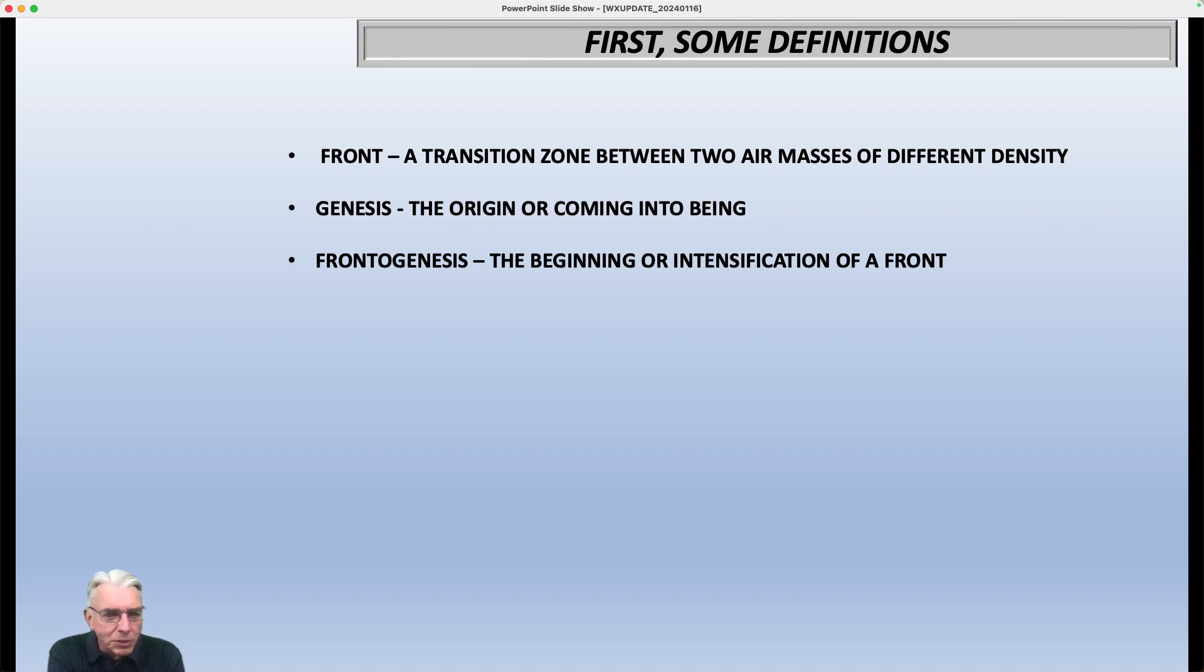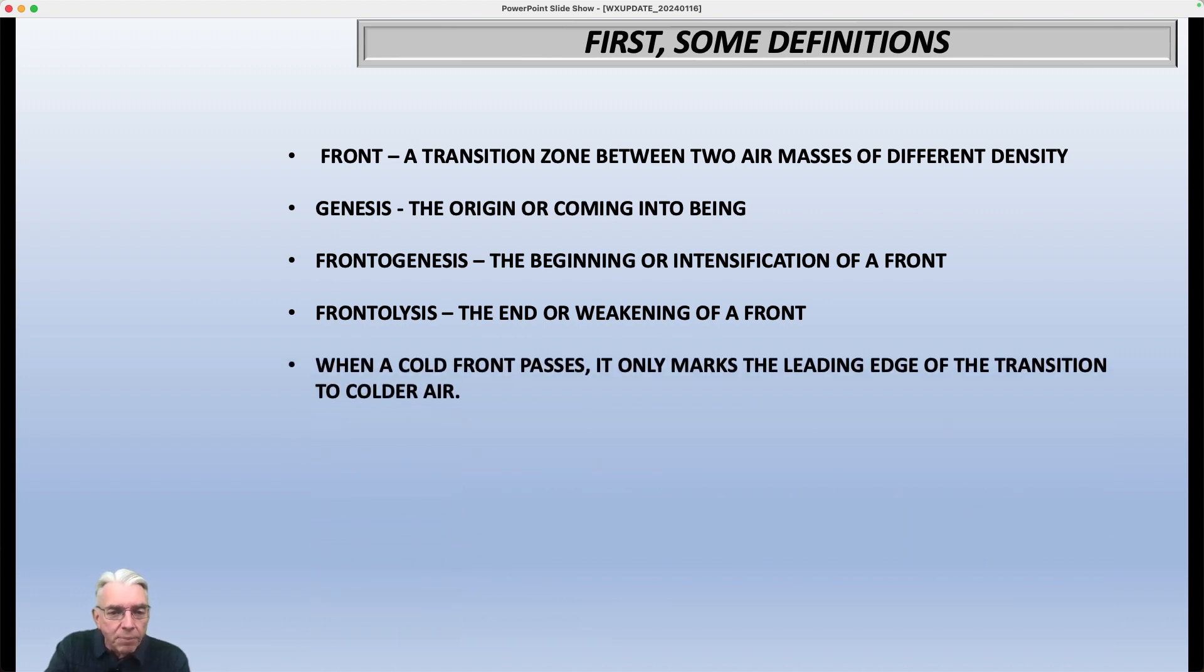But then over time, cold air starts to come in from the north, warm air comes up from the south, and all of a sudden you've got a pretty good temperature gradient. And so that would be an example of frontogenesis. Frontolysis is exactly the opposite. It's the end or the weakening of a front. So the amount of temperature contrast would actually decrease over time.